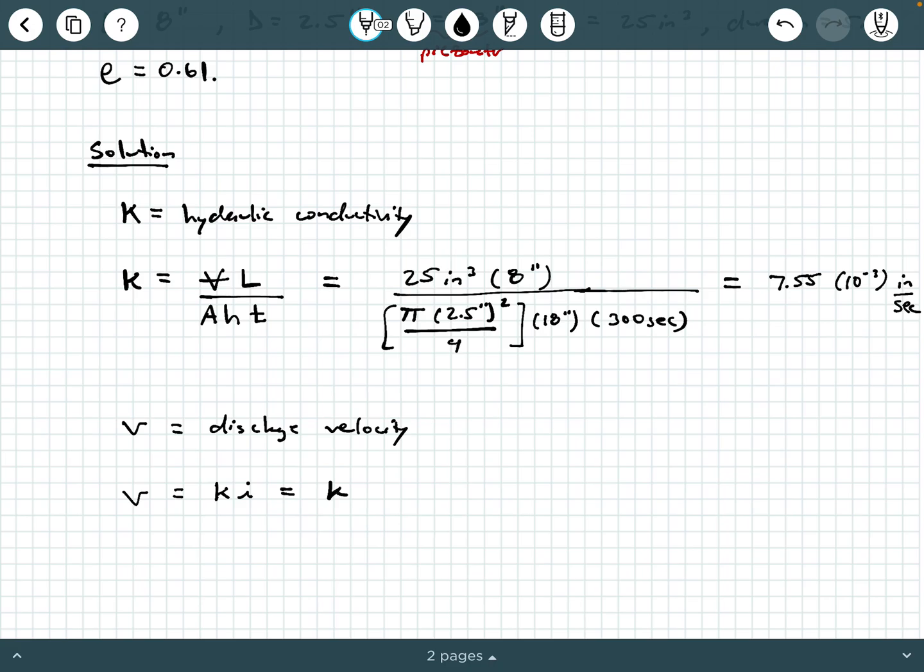And so that's going to be k that we just calculated times h over L. Now we can substitute values in, and we're going to substitute the k value that we just calculated, 0.00755 inches per second, multiplied by 18 inches over 8 inches.